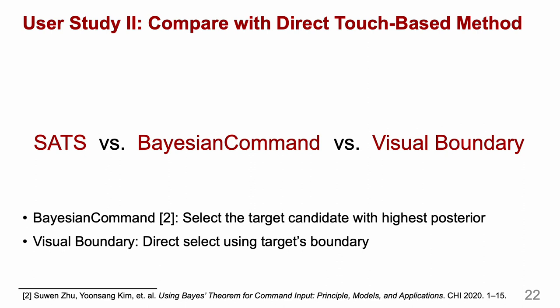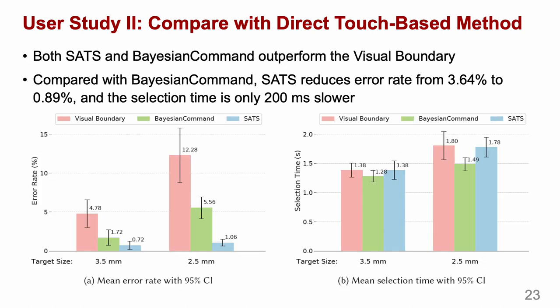In the second user study, we compare SETS with two direct touch-based methods. The Bayesian command method selects the target candidate with the highest posterior. The visual boundary method is a direct select method using the boundary of the target. The results show that both SETS and Bayesian command outperform the visual boundary method. Compared with Bayesian command, SETS reduces the error rate from 3.64% to 0.89%, with only a slight increase in selection time of 200 milliseconds.